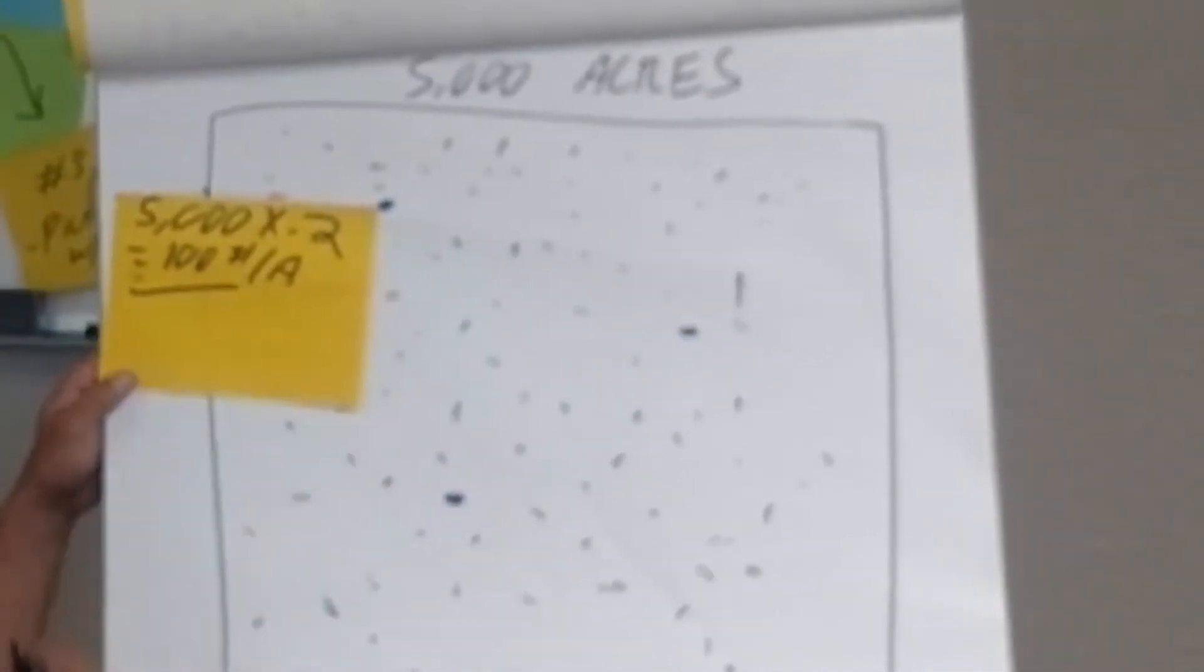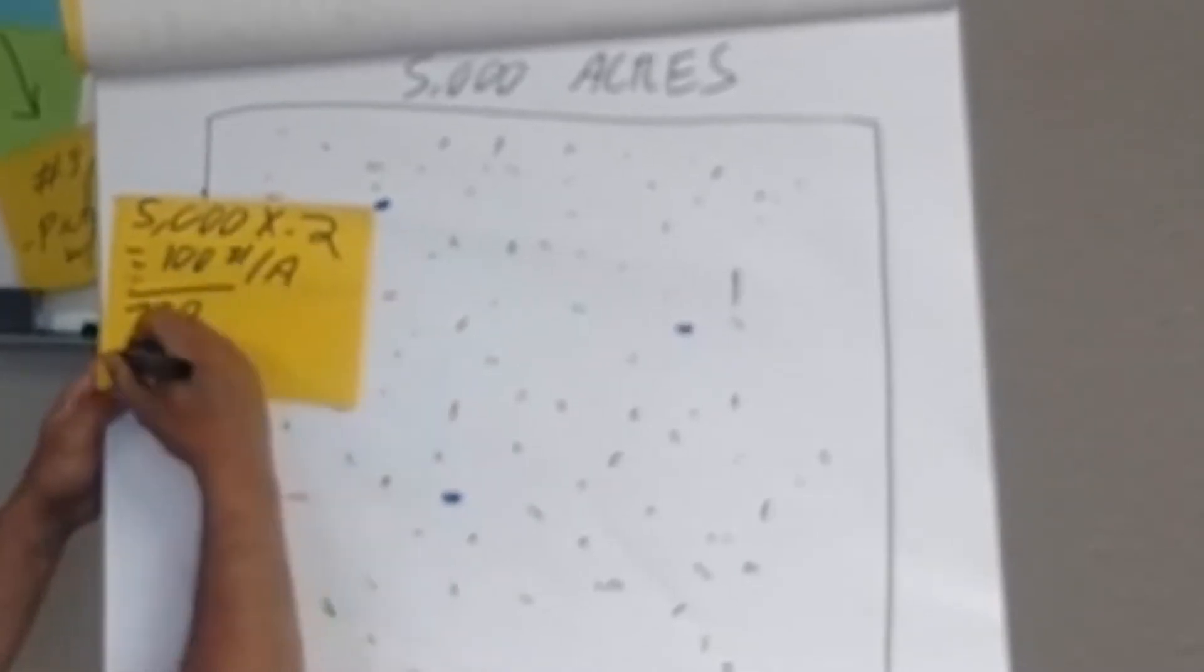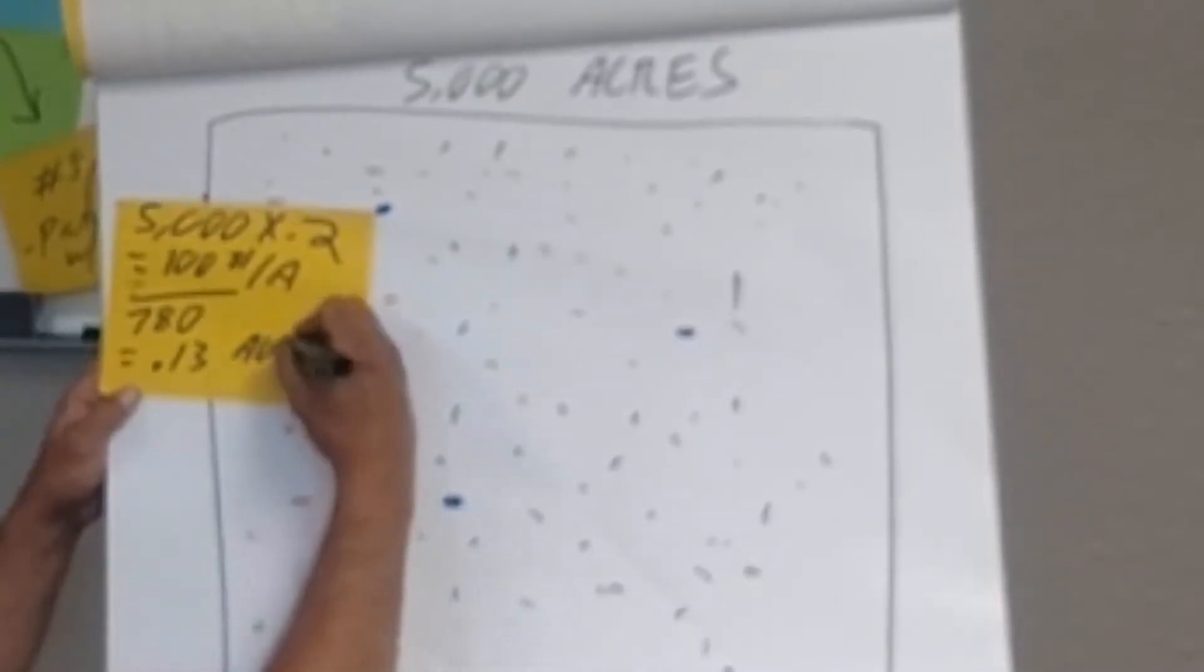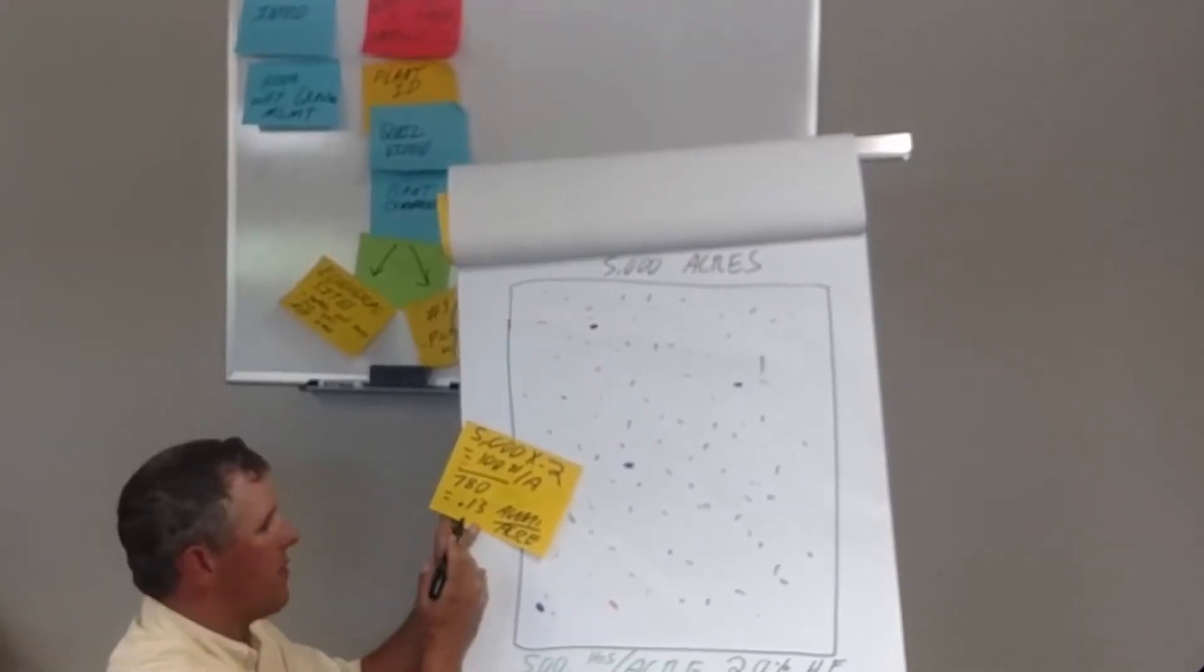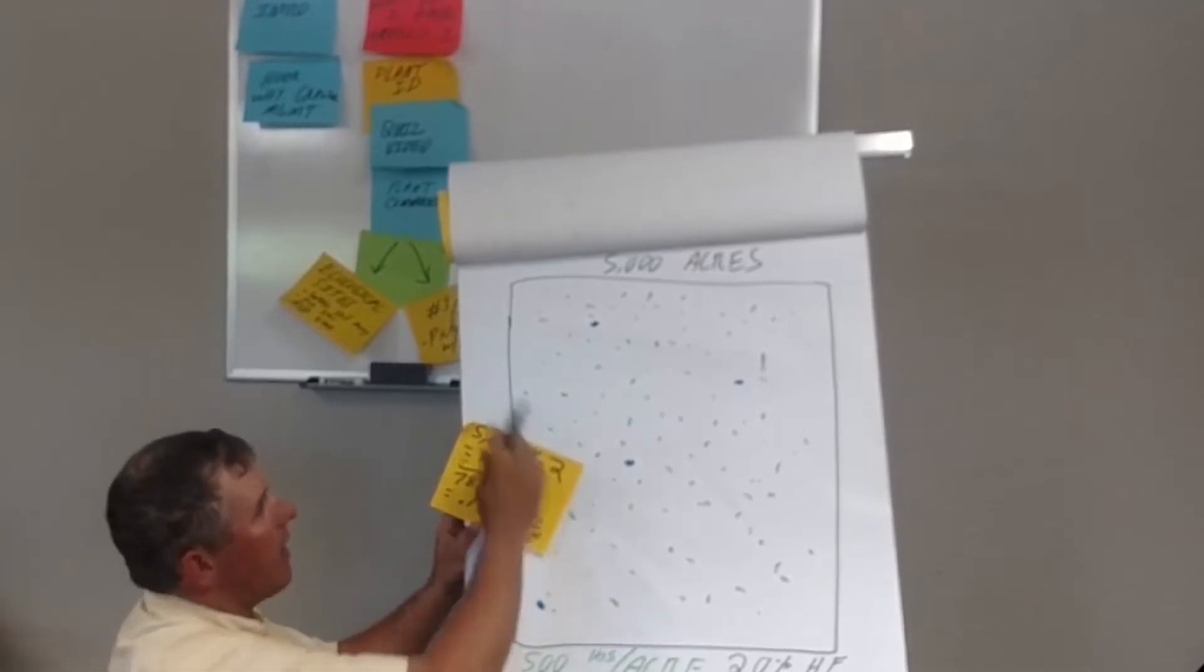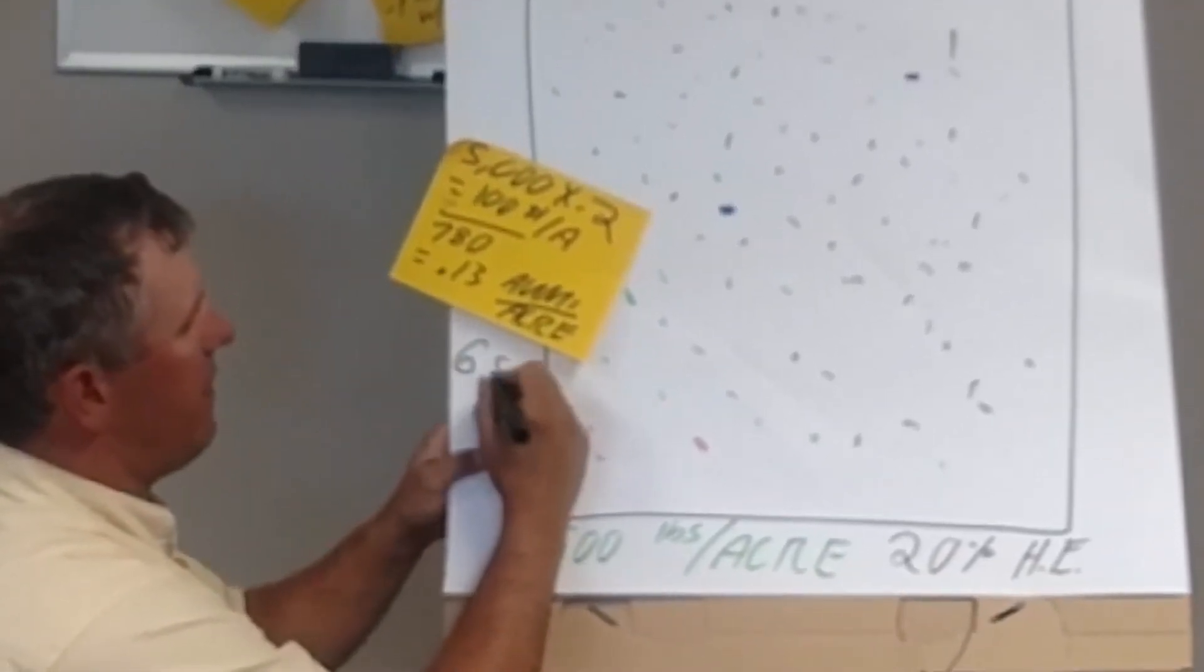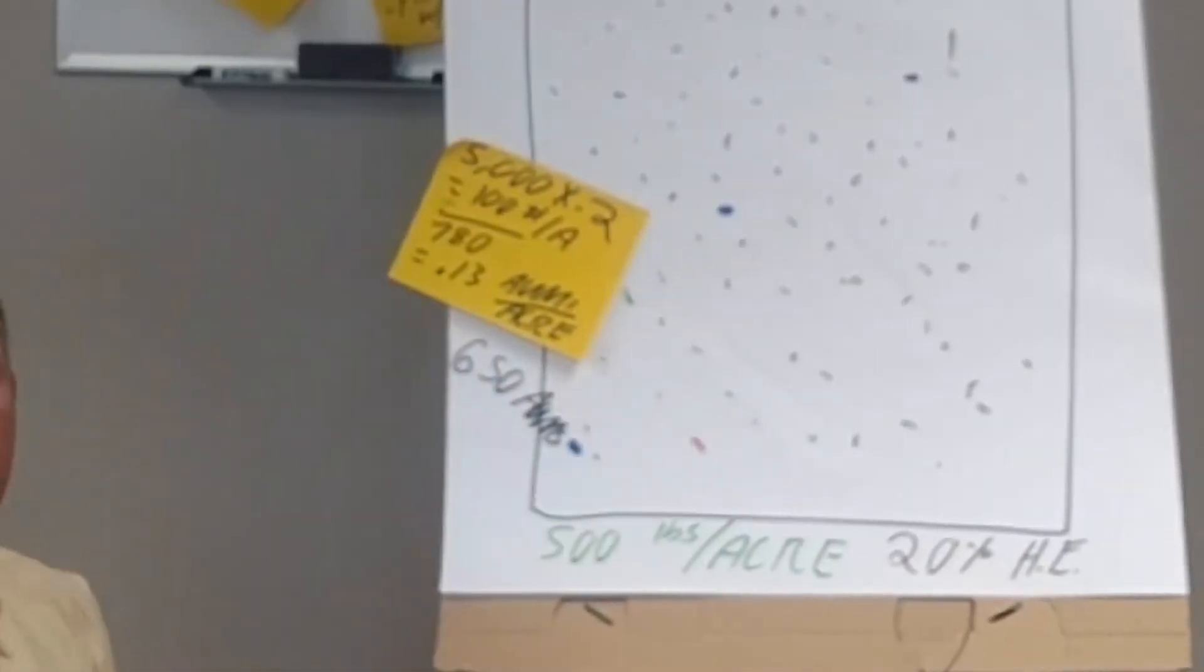Divided by the number of pounds in an AUM, which is 780, gives me .13 AUMs per acre. At .13 AUMs per acre and 5,000 acres, that gives us 650 AUMs from this 5,000 acre pasture.